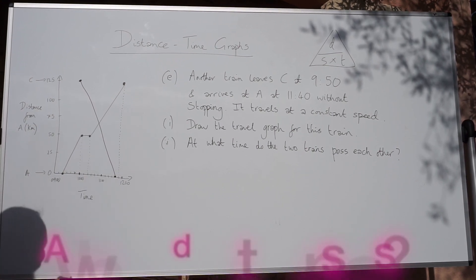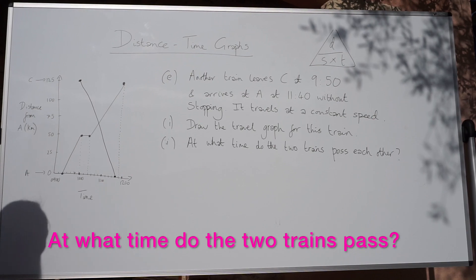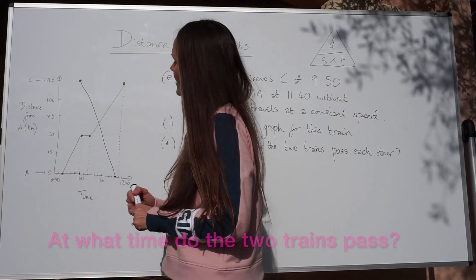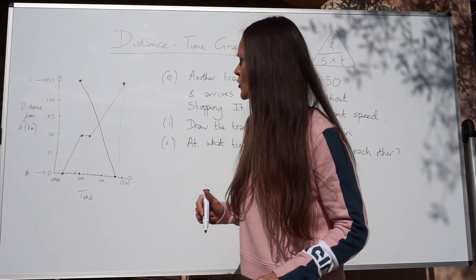Then it asks us, at what time do the two trains pass each other? So they pass each other here, where the two lines cross.